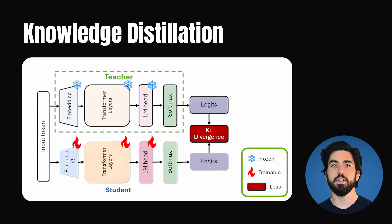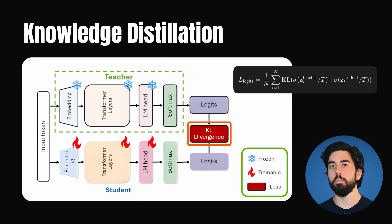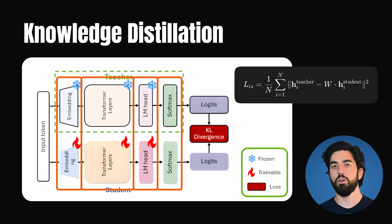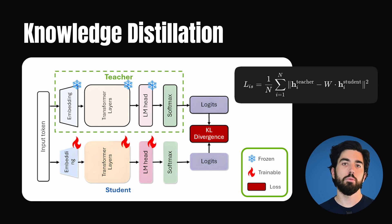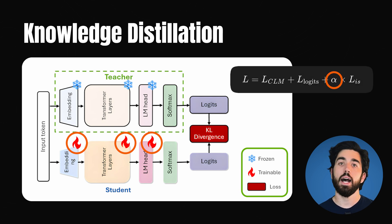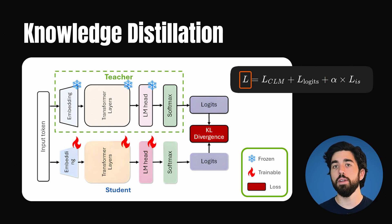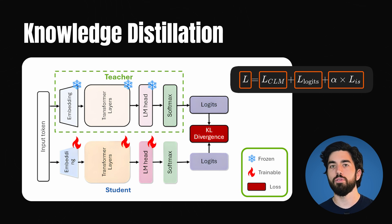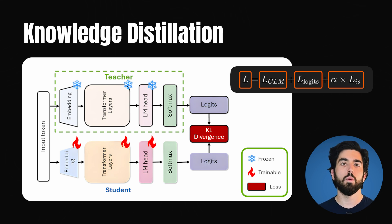The student compares its probability distribution with the teacher's using a logit-based knowledge loss. It also matches the intermediate hidden states of the teacher model at different layers. Since student and teacher models differ in size, the student's hidden states are transformed to match the teacher's using a linear transformation. An adjustable parameter, alpha, controls how much weight is given to this loss. The total loss includes three components: the student's prediction, the logit-based loss, and the intermediate state-based loss, helping the smaller model retain much of the knowledge from the larger one.